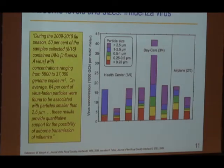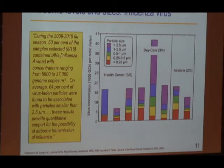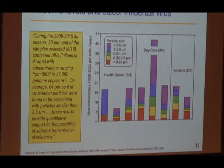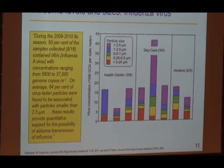A group at Virginia Tech made airborne sampling measurements using qPCR with size resolution looking for the flu virus during the 2009-2010 flu season. They collected samples in a health center, a daycare facility, and on airplanes. Out of 16 air samples collected, they detected flu virus in half—eight cases. The majority of the flu virus was on particles smaller than 2.5 micrometers in diameter, which would persist and be disseminated throughout an entire interior space. These results provide quantitative support for the possibility of airborne transmission of influenza.